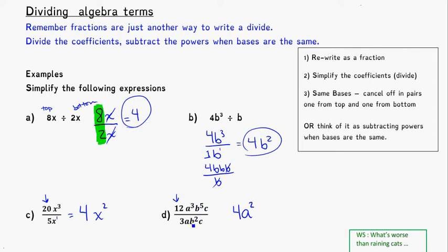I have 5 b's on top and 2 b's on bottom. So if I take 2 off the bottom and I take 2 off the top, I'm left with 3 b's on top. And here I see a c on top and a c on bottom, so I can just cancel those directly and I'll have no c's left.